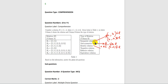Identity relation: (A, A) belongs to R for all A belonging to the set A. That means all the elements of A are related to itself only.